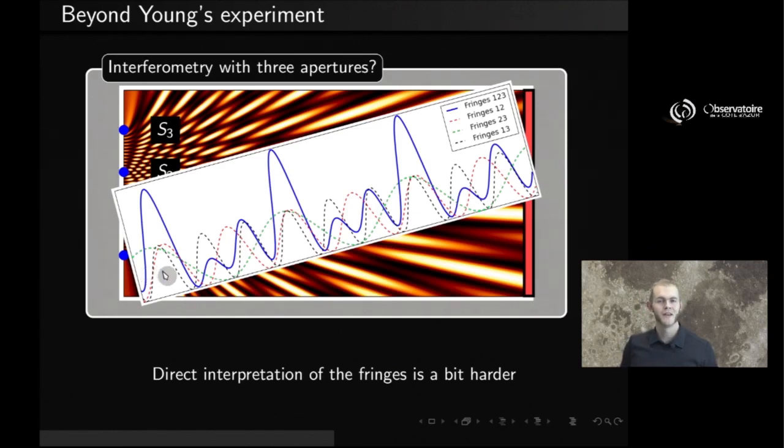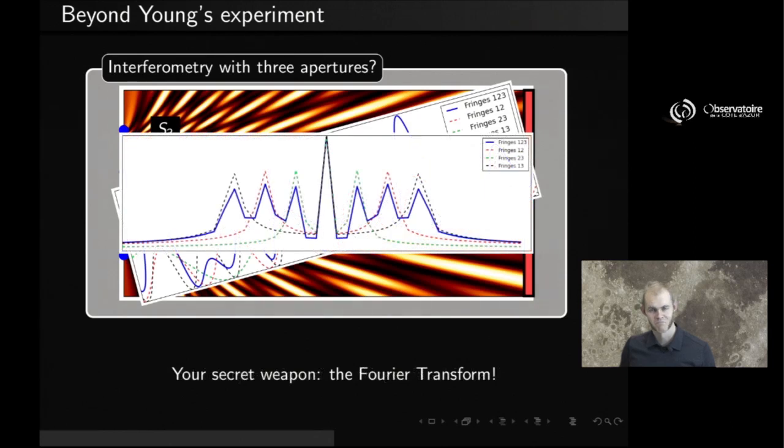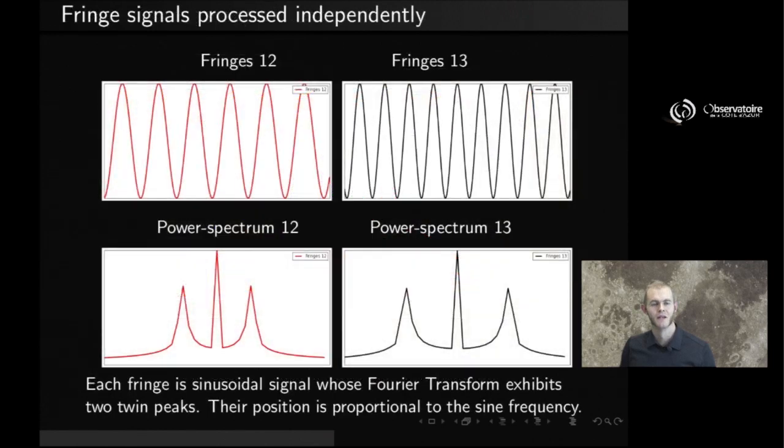But you are now equipped with the mighty Fourier transform that will help you interpret this data. So let's look at exactly what it shows. Here I'm showing you the example associated to two sets of fringes.